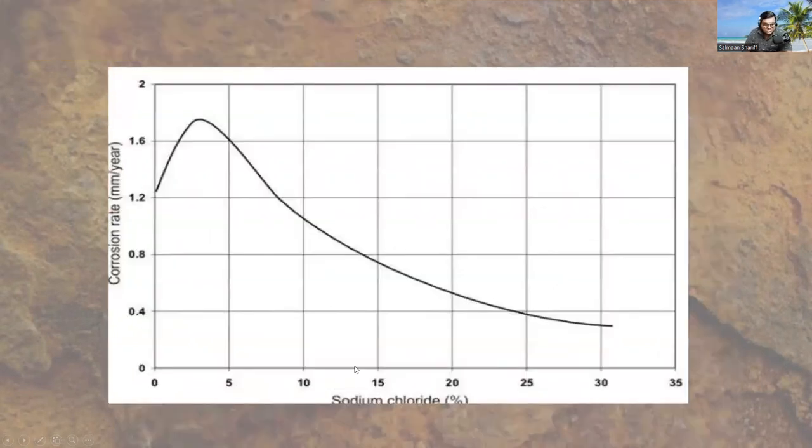In the next graph, we can see corrosion rate versus sodium chloride percentage which is dissolved in the steel or whatever material we are testing. As the sodium chloride percentage increases in the object, the corrosion rate increases up to a certain point and then decreases after a certain extent.